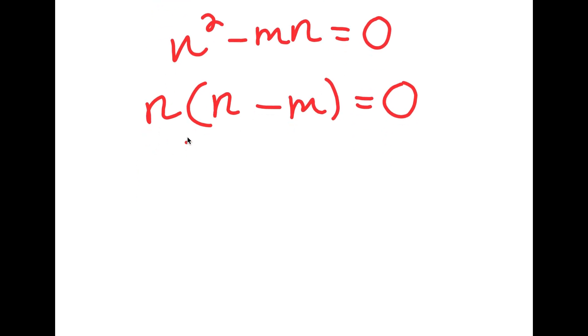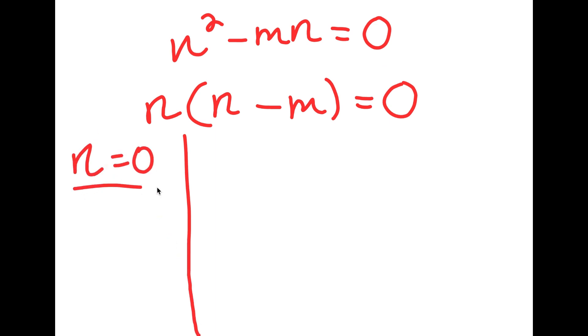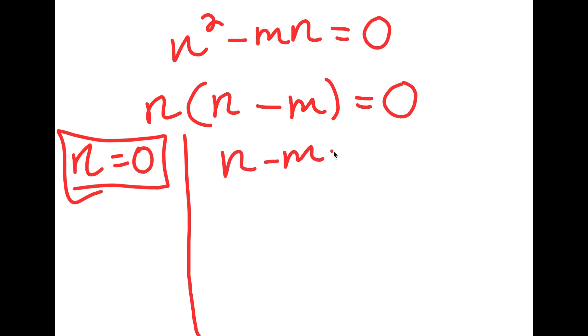So now this gives me two equations. I get n is equal to 0, which is already a solution. And I also get n minus m is equal to 0.